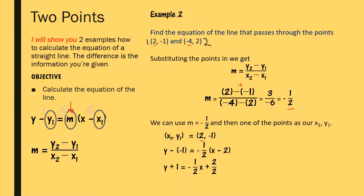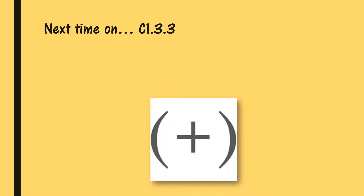Expanding the brackets: minus minus 1 becomes plus 1, and minus a half times x is minus a half x, while minus a half times minus 2 is plus 1. Bringing the plus 1 from the left over to the right gives minus 1, which cancels with the plus 1, leaving y equals minus a half x. That is the equation of the line passing through the points (2, -1) and (-4, 2).